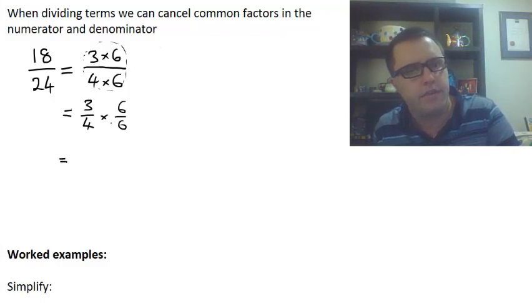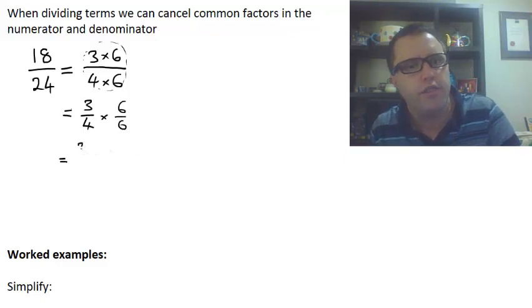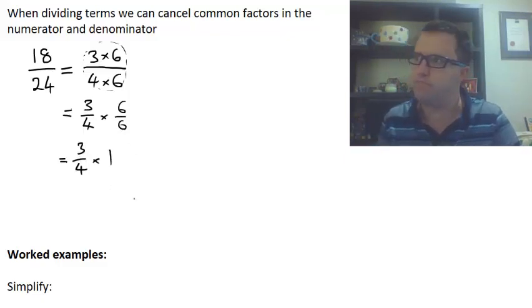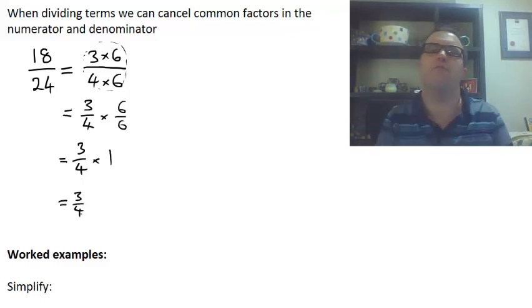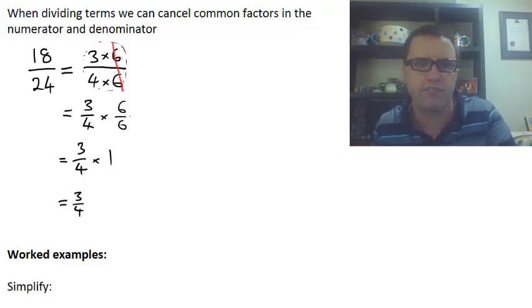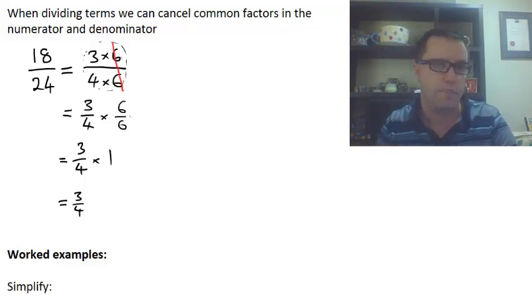Now, 6/6, how many 6s in 6? There's 1. So 3/4 times 1, anything times 1 is the same thing, equals 3/4. It's a lot of work, and we simplify this by just saying we can cancel common factors. I could have just gone from the start—there's a 6 on the top and a 6 on the bottom, and they're all just multiplied. I can cancel those out, because that 6 divided by 6 is just 1.